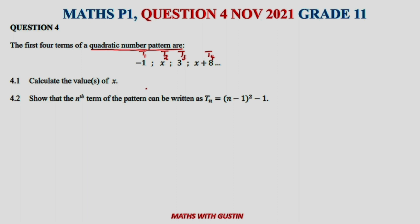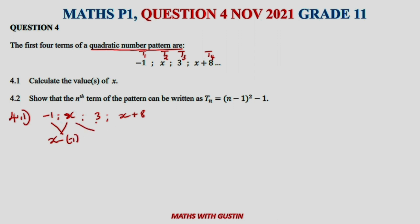4.1 asks us to calculate the value of x. We have the terms: minus one, x, three, and x plus eight. The first differences are: x minus (minus one), which gives x plus one; then 3 minus x; and then x plus 8 minus 3.